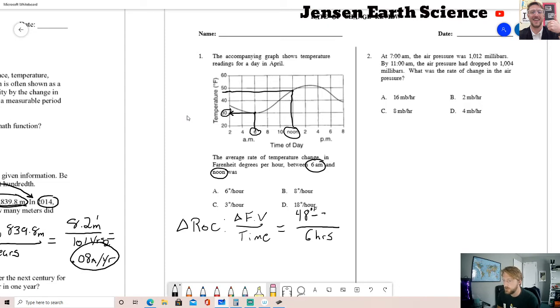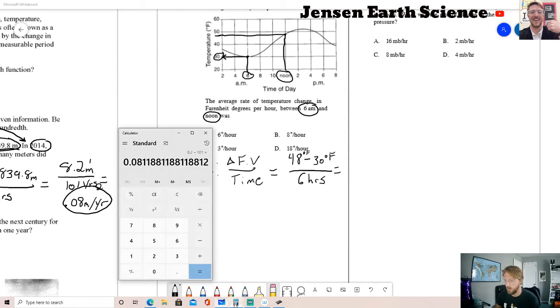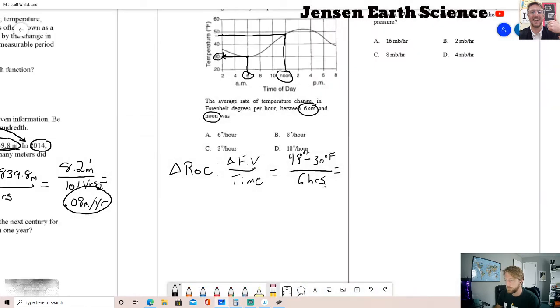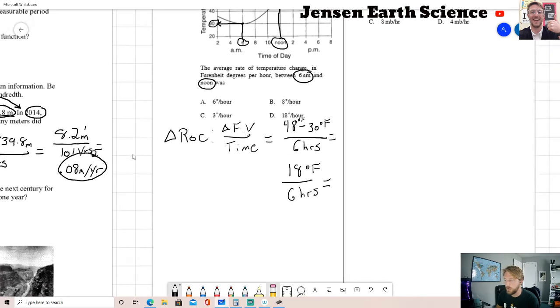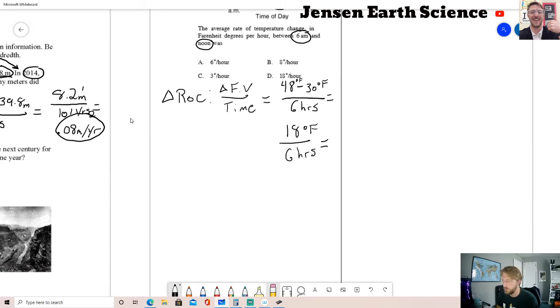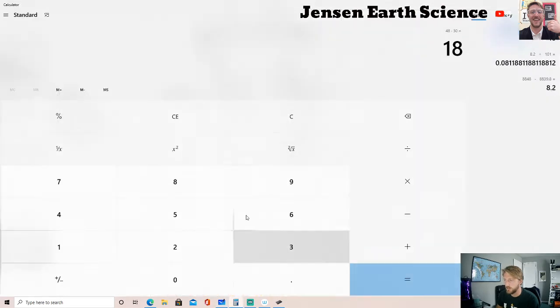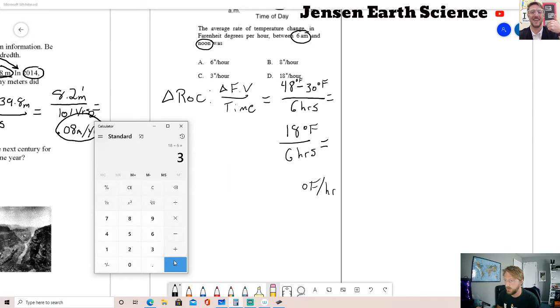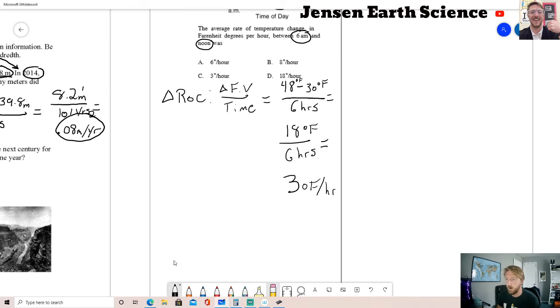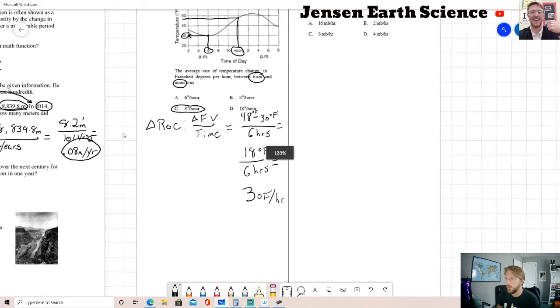Fahrenheit minus 30 degrees Fahrenheit, that gives us 18. So my final equation would be 18 degrees Fahrenheit over six hours. I'm going to do my units first: degrees Fahrenheit per hour because it's top per bottom. Now I just have to do 18 divided by six. 18 divided by six gives me three degrees Fahrenheit per hour, which is an answer, and I would just circle it.